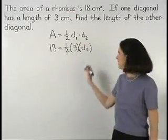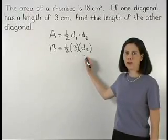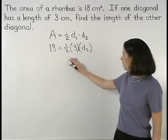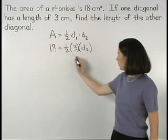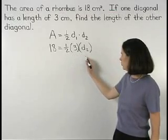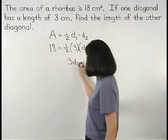Now to find d2 or the other diagonal of the rhombus, we first simplify on the right side of the equation. 1 half times 3 times d2 can be simplified to 3d2 over 2.